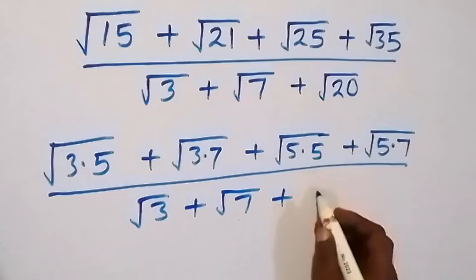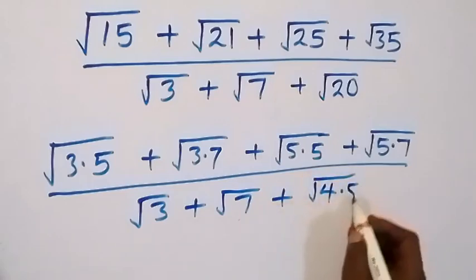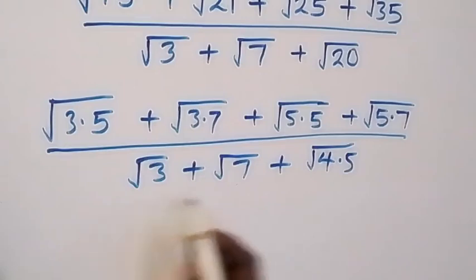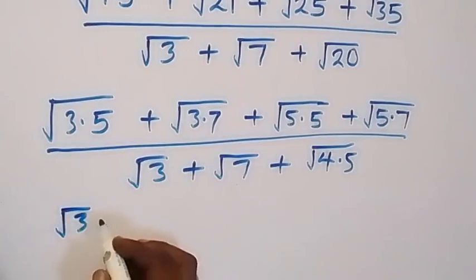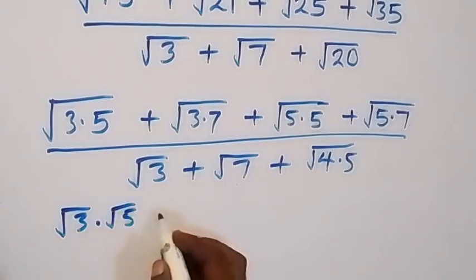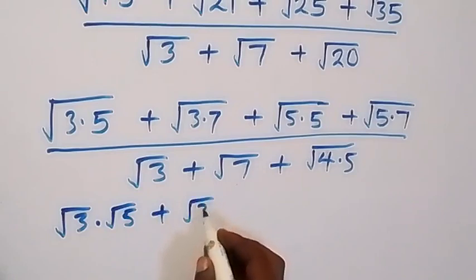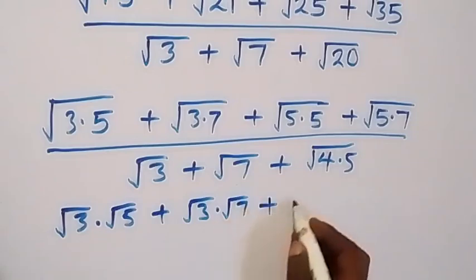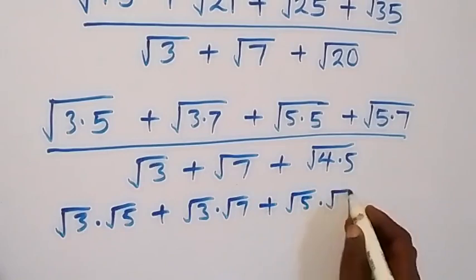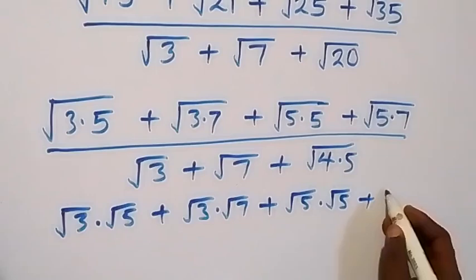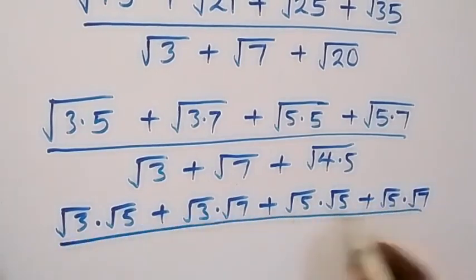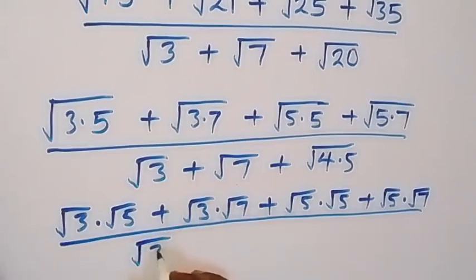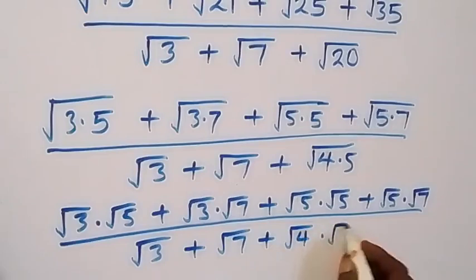Then plus here we can also write this as root 4 times 5. From the law of square roots, we can separate this into two new roots, and this will become root 3 times root 5, plus here we have root 3 times root 7, and plus this becomes root 5 times root 5, and also here we have plus root 5 times root 7, then divided by the denominator root 3 plus root 7, then plus root 4 times root 5.